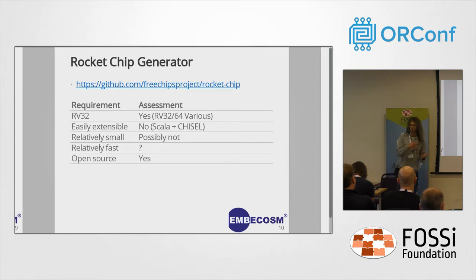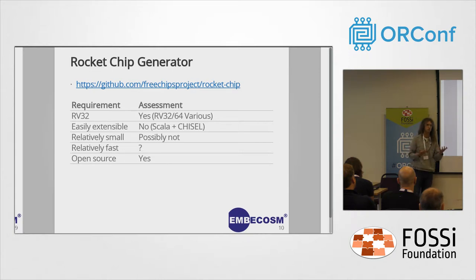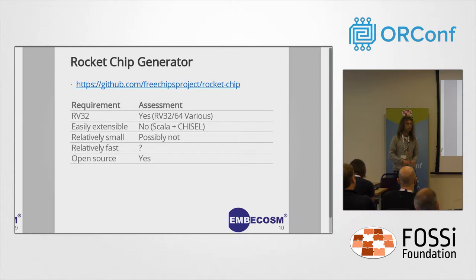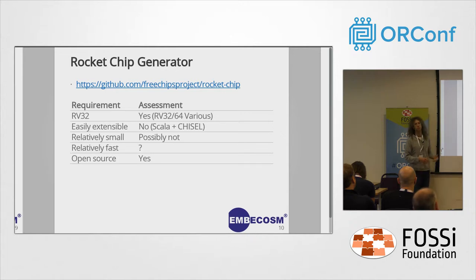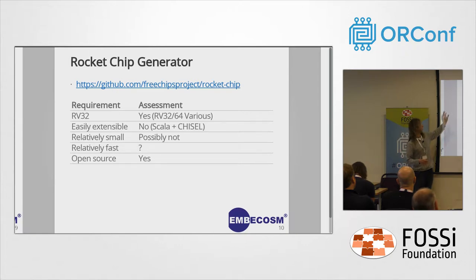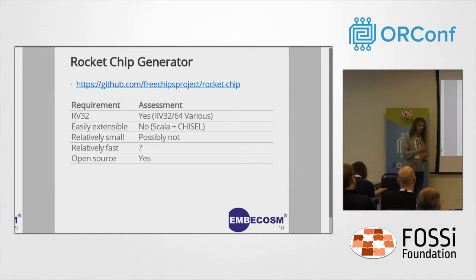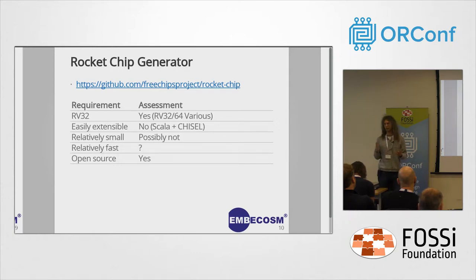The Rocket Chip Generator — we thought we'd better have a look at it because in some ways it looks like the canonical RISC-V implementation, and it's where lots of resources point to. It kind of meets some requirements in that you can generate an RV32 core or SoC. Whether it's easily extensible — some people would say yes, but from my point of view it's not that easily extensible because I don't know Scala or Chisel, and there would be a bit of a learning curve.